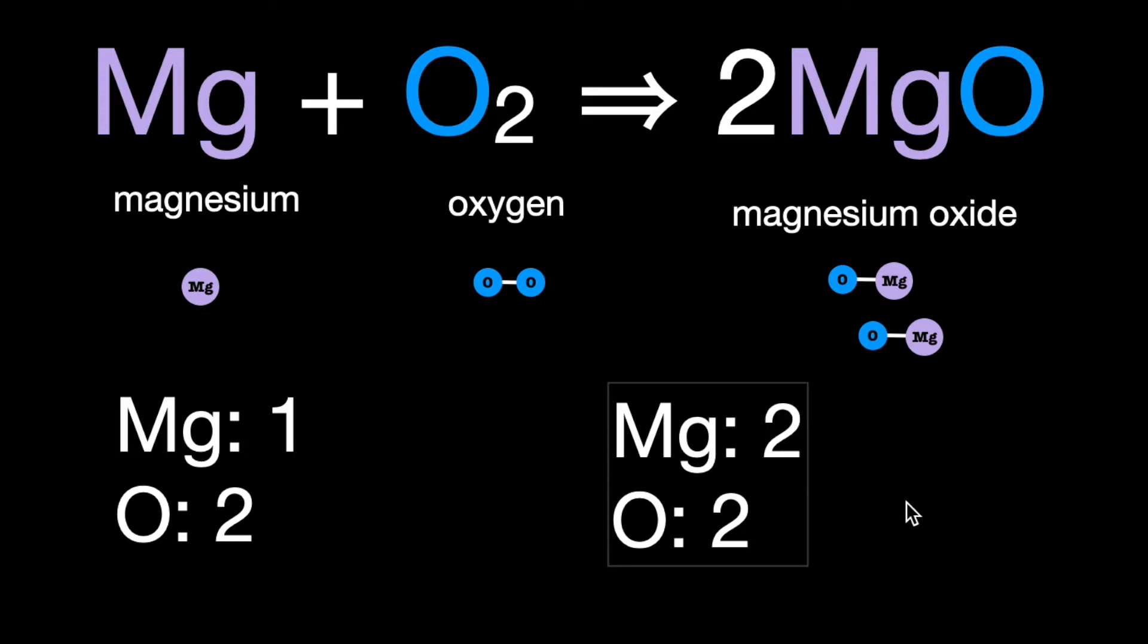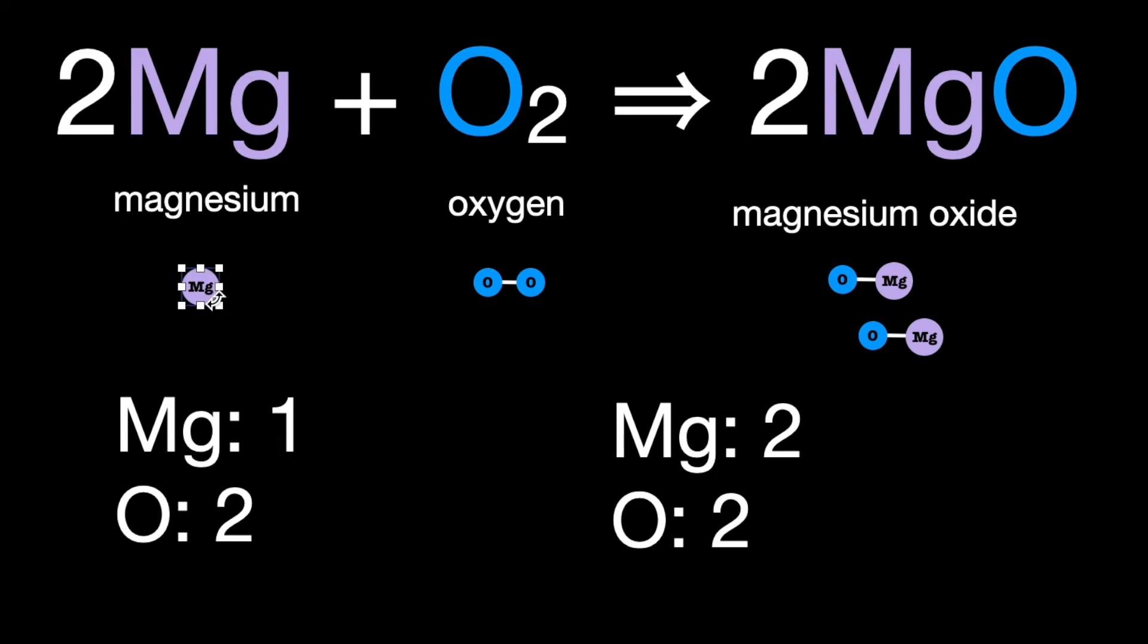Alright, well that worked to balance, but now on the left, we're unbalanced with magnesiums. So again, why don't we just double what we have here going in? This is not a magnesium molecule with two magnesium atoms. This is two separate atoms going into our equation.